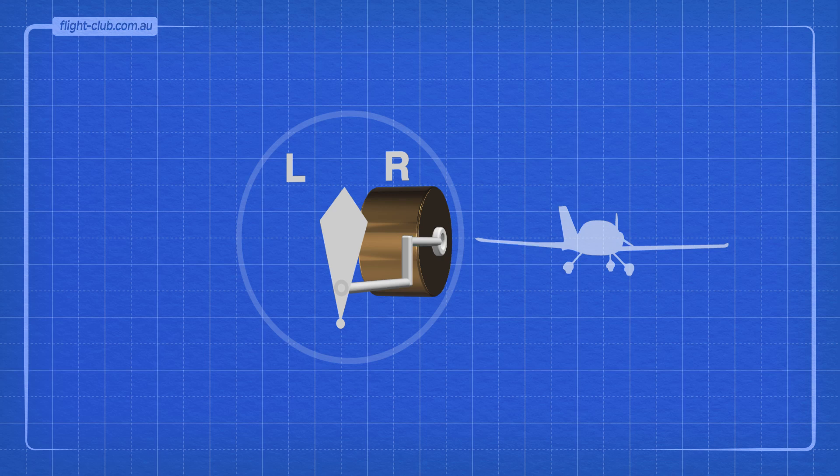One instrument that uses gyroscopic precession is the turn indicator. This instrument displays the rate of turn to the pilot. In this instrument, the spin axis is horizontal.